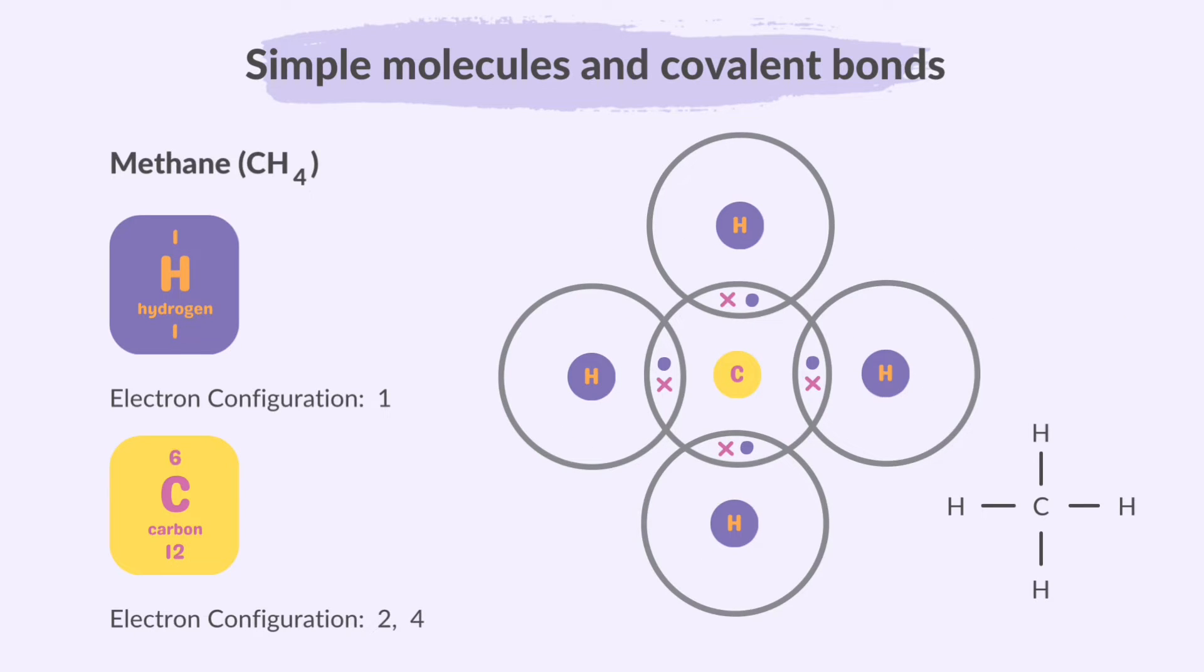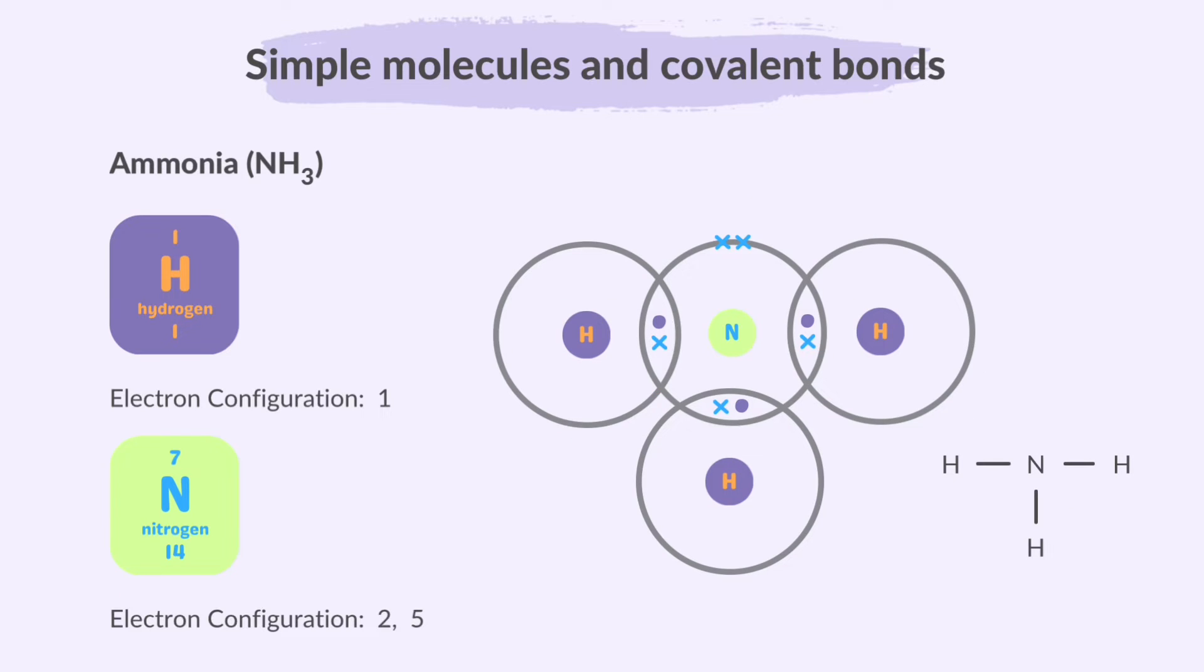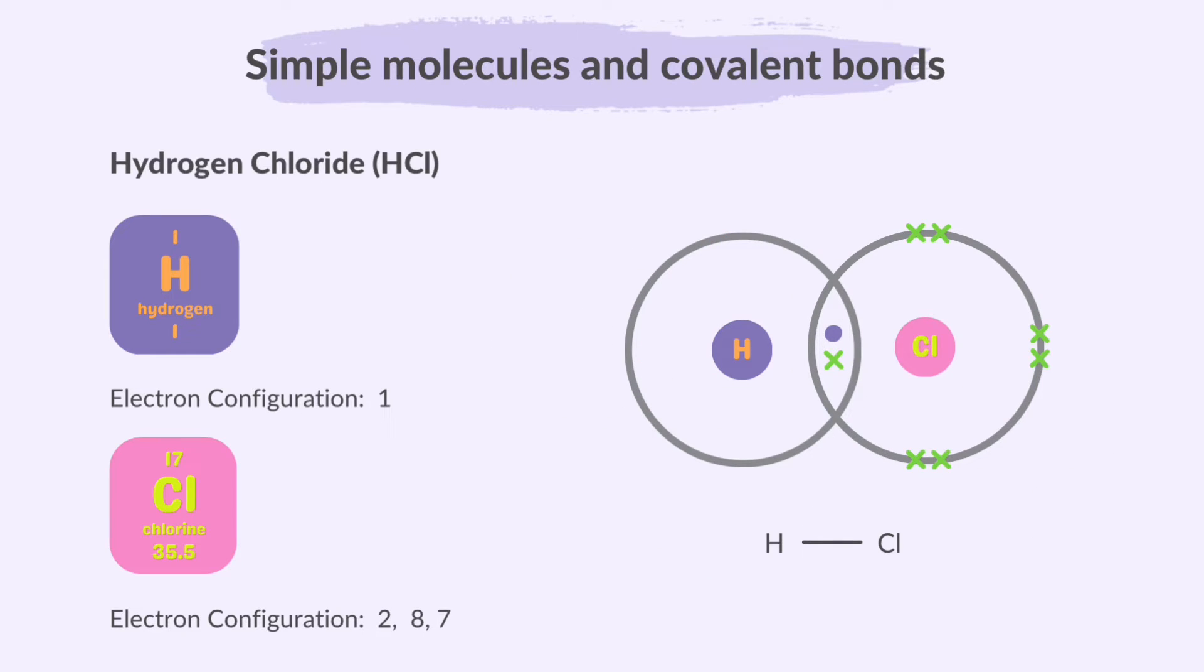In methane, or CH4, four hydrogen atoms share their electrons with a carbon atom. This sharing creates four covalent bonds between hydrogen and carbon, forming a stable methane molecule. This is how a covalent bond forms in ammonia. And this is hydrogen chloride.